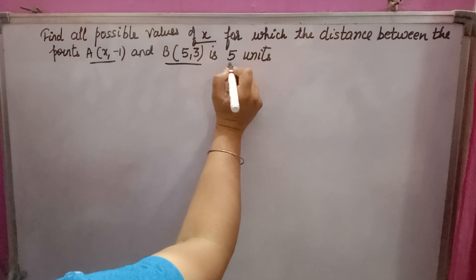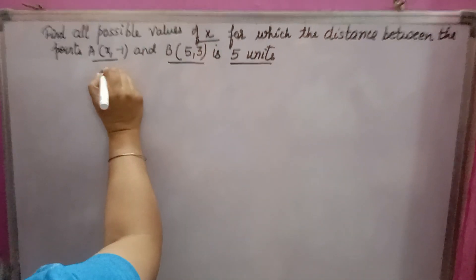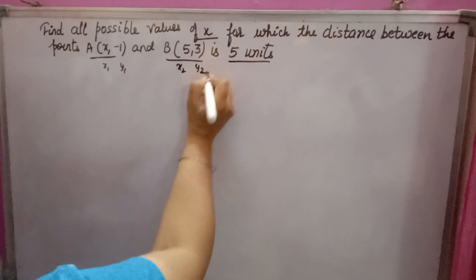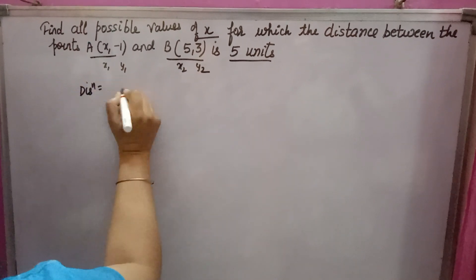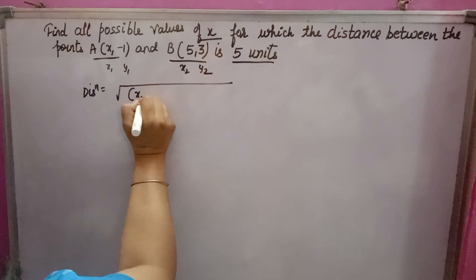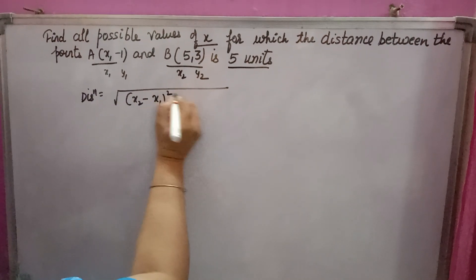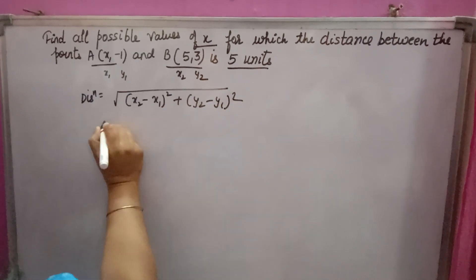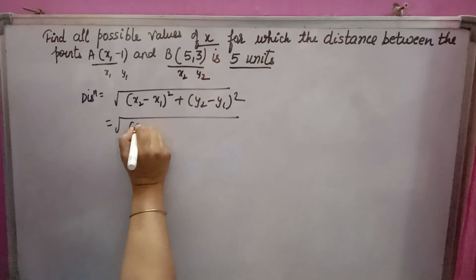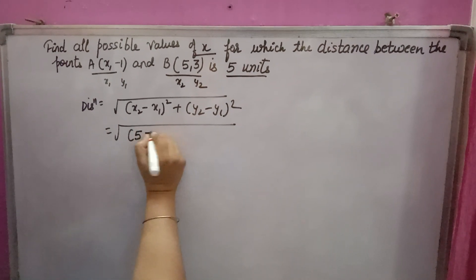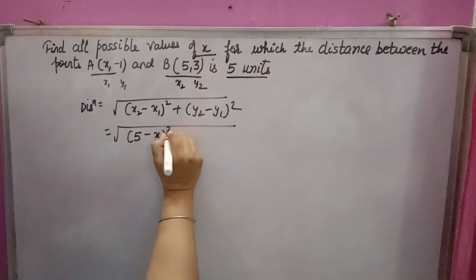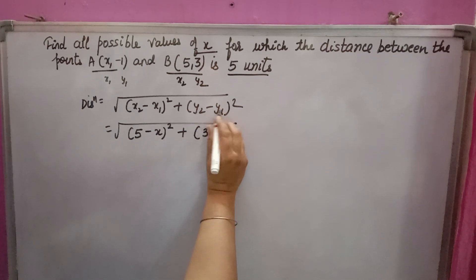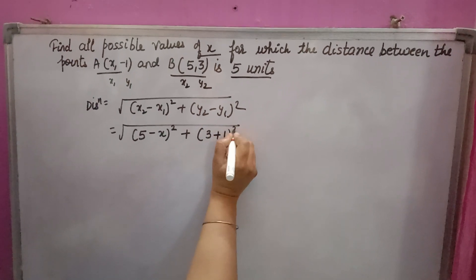The distance is 5 units. Suppose x1, y1 and x2, y2 — this is the formula: under root of (x2 minus x1) whole square plus (y2 minus y1) whole square. x2 is 5, x1 is x, so (5 minus x) whole square; y2 is 3, y1 is minus 1, so (3 minus of minus 1) whole square.